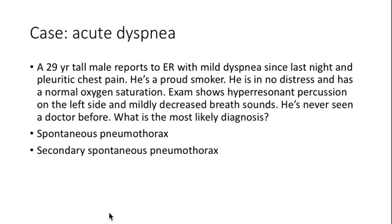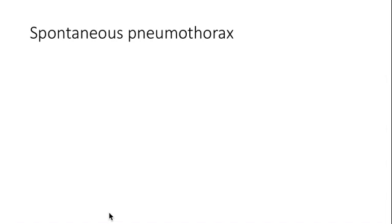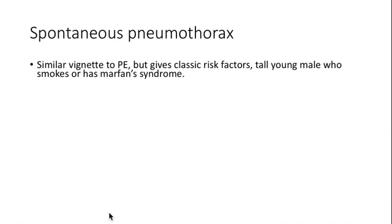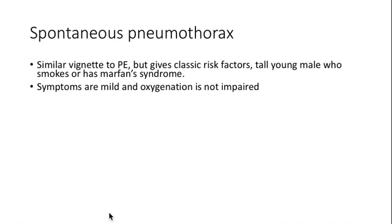The differential includes spontaneous pneumothorax, secondary spontaneous pneumothorax, PE, or pneumonia. In this case, someone who's young, tall, with a marfanoid habitus — this is going to be a spontaneous pneumothorax. The vignette can look similar to a PE, but read the rest of the question: this person doesn't have PE risk factors and is tall and smokes, probably suggesting Marfan syndrome on the exam. Despite essentially having a ruptured lung, their symptoms are mild because they have enough reserve capacity to compensate.